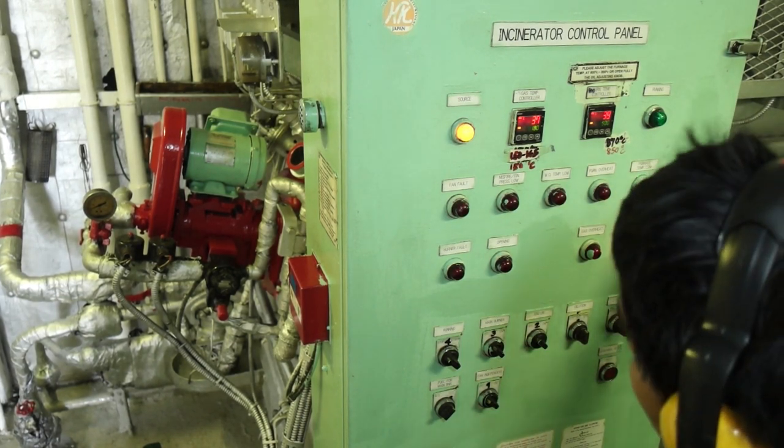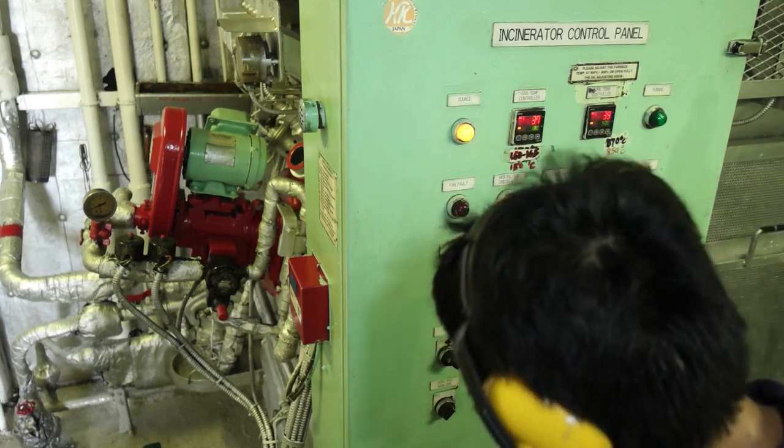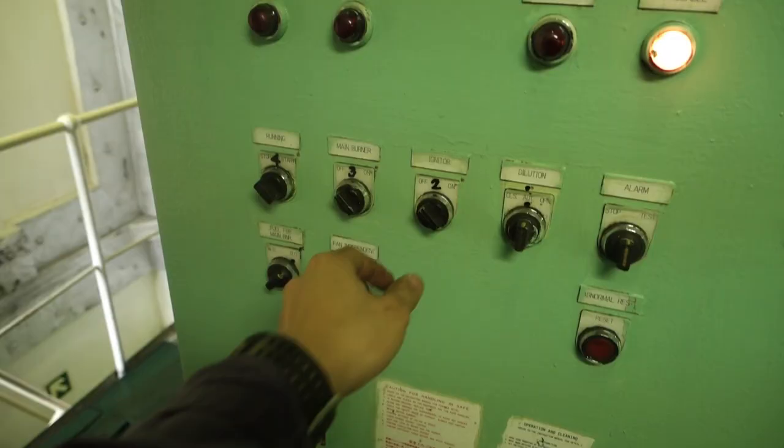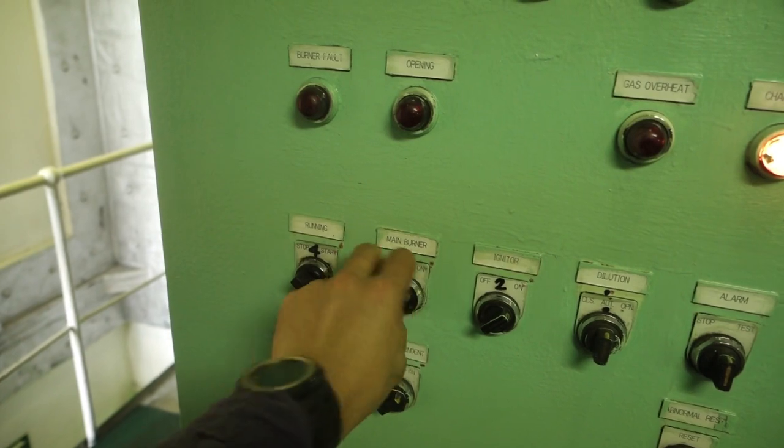In this scenario, the operator has told me that the main burner motor won't start. But first let me show you how you would test a live circuit using a voltmeter.